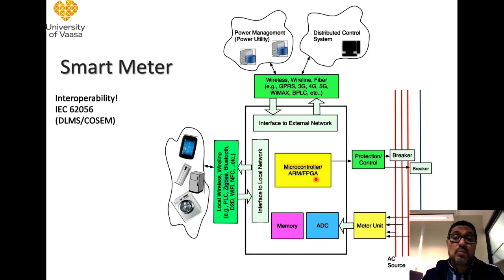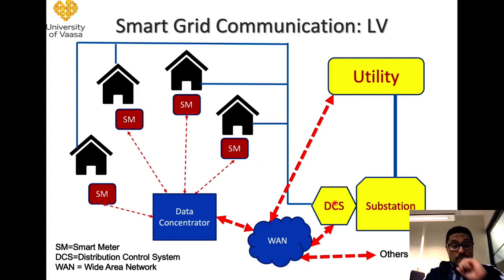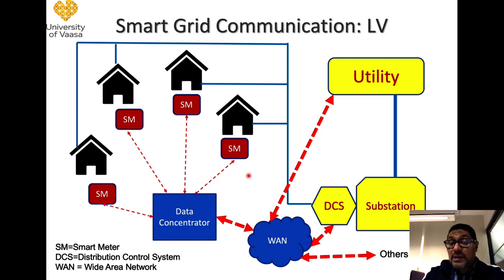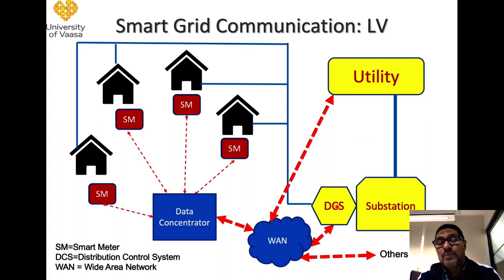In a more general structure, each smart meter should be able to communicate with the utility or the distribution control system. To have a more efficient network, it would be better to have a data concentrator. The data concentrator collects data from many smart meters — especially for small customer sites — and connects that data to the wide area network, which then goes to the utility and the distribution control system to manage power distribution.